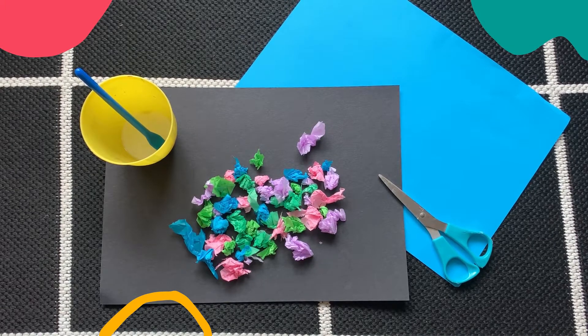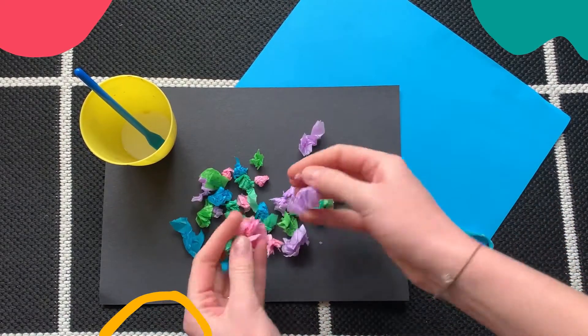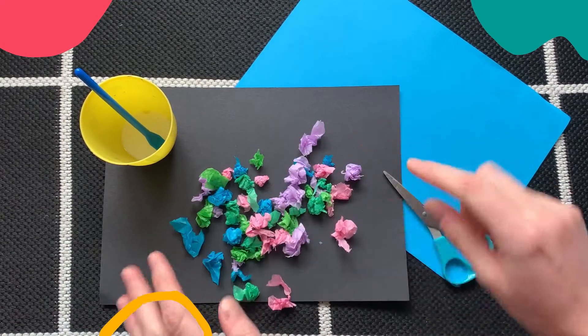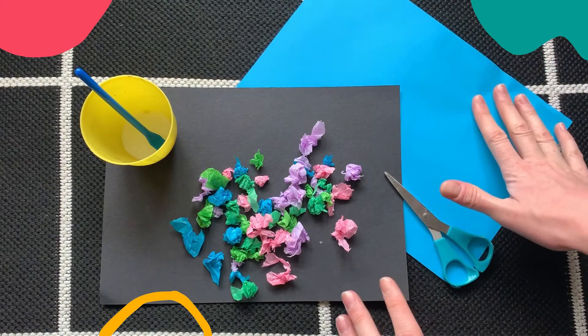So what will you need? You're going to need some scissors, some glue, some tissue paper that's rolled up into little bits, a piece of black or brown card and then another piece of paper, whatever colour you like. I've gone for blue.